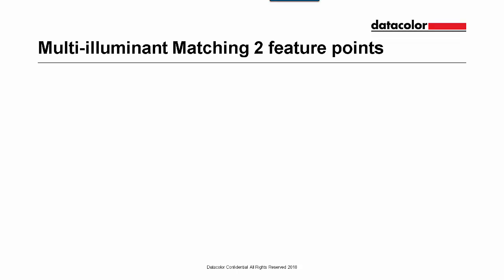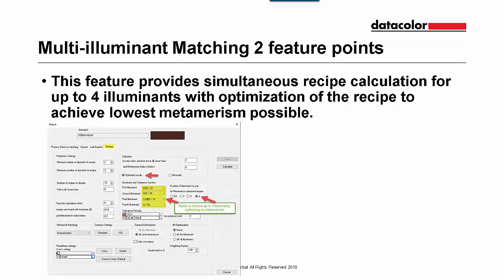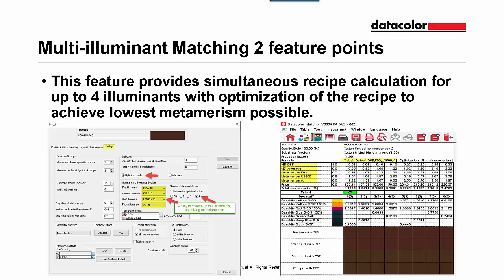The next option is Multi-Illuminant Matching and it is worth two feature points. This feature allows recipe calculations for up to four illuminants, optimizing to achieve the lowest metamerism. When this feature is active, we can select up to four illuminants on the Settings tab in the Matching section. We can also optimize on metamerism for the four illuminants. The recipe results you get in the table can show all four illuminants and recipes optimized for metamerism. It will order them according to best match and best metamerism.